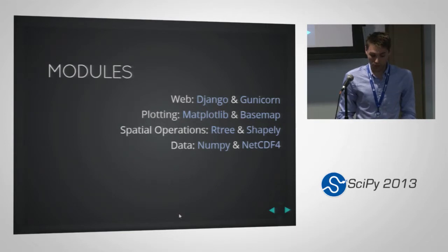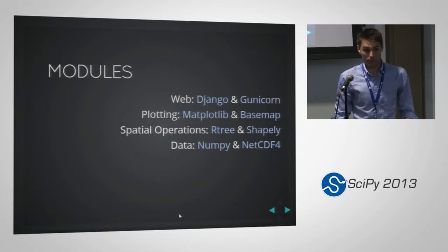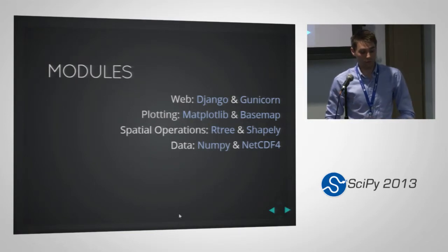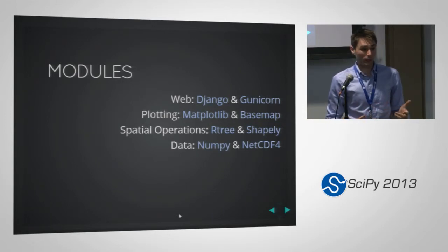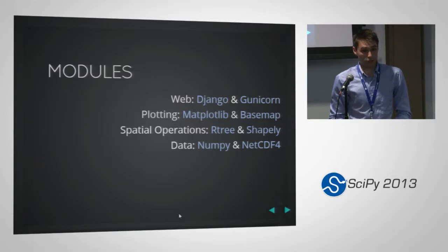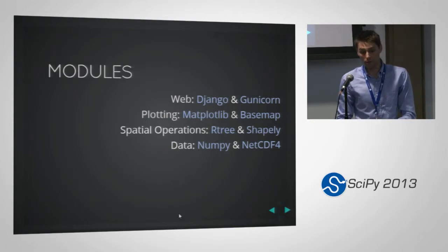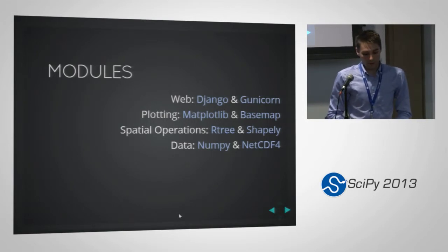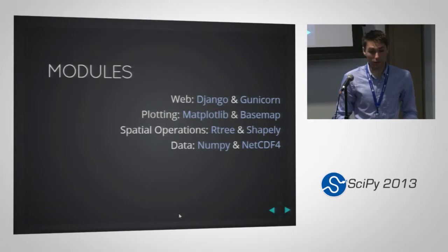These are the basic module dependencies. We rely on Django for the web framework — if I were to redo it I'd probably use Flask, but Django worked very well. Gunicorn is a WSGI server serving Django, usually behind Nginx. Matplotlib and Basemap are really important — Basemap handles all the projection and layout for geographic data. For spatial operations we use an R-tree library and Shapely, which is very convenient. NumPy and NetCDF form the foundation of data access, storage, and manipulation.